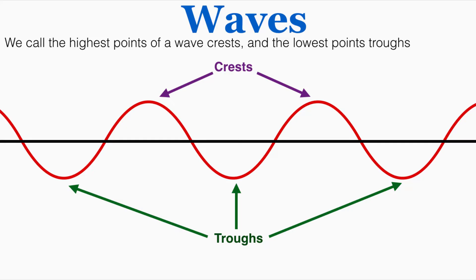This is some arbitrary but important vocabulary. We call the highest point of a wave the crest of a wave and the lowest point the trough of a wave. So these are crests and troughs of a single wave.